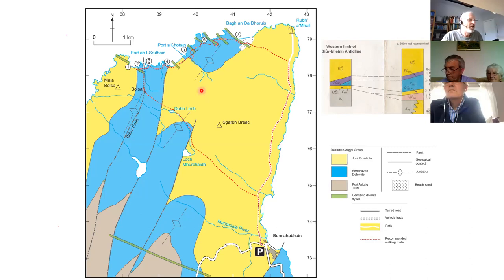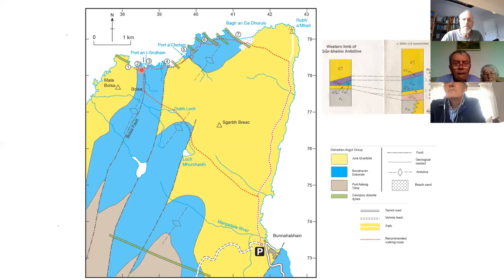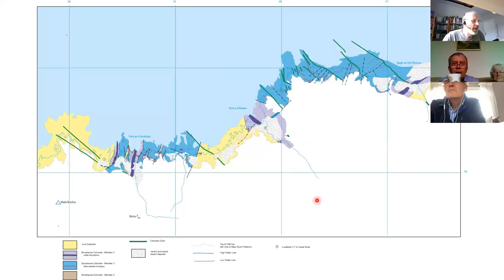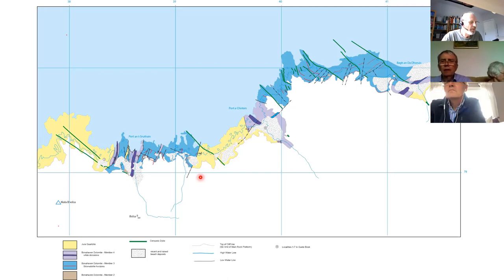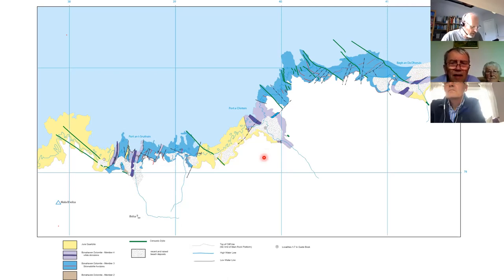The red breadcrumb line is the route we're going to go — north from Bonnerhaven, tramp across the moor, then walk along the coast, and then back near Rubha Lighthouse and back to Bonnerhaven. This is a detail map I've been compiling over all the visits I've made there over the years. It shows localities one through seven in more detail, and I'll refer to and flip back to this map as we go along so you won't get lost.